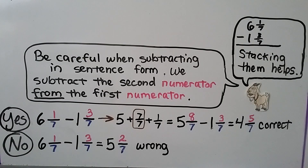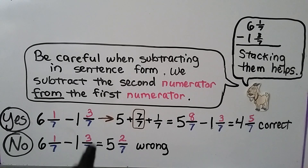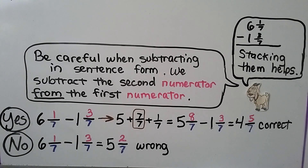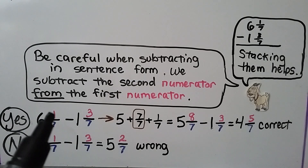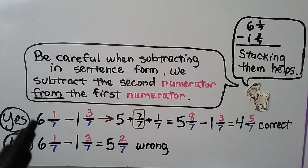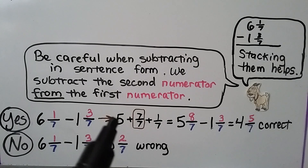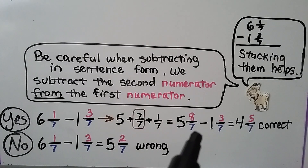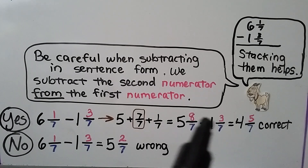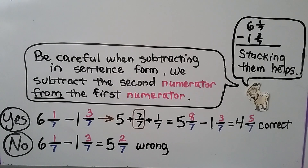Be careful when subtracting in sentence form. When our equation is written in sentence form, we need to subtract the second numerator from the first numerator. In order to do this, because 1 is not great enough to take 3 away, we rename the 6 as a lesser whole number — a 5 — and the fraction part as a fraction greater than 1. We would have 5 and 8 sevenths minus 1 and 3 sevenths. 8 minus 3 is 5, so we have 5 sevenths. And 5 minus 1 is 4. We would have 4 and 5 sevenths for the correct answer.